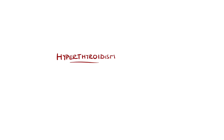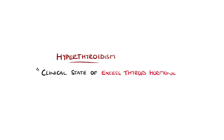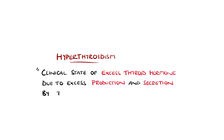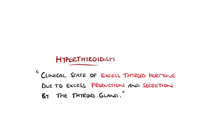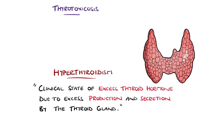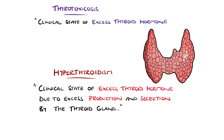Hyperthyroidism is defined as a clinical state of excess thyroid hormone due to excess production and secretion by the thyroid gland. This is sometimes confused with the term thyrotoxicosis, which is the clinical state of excess thyroid hormone for any reason.